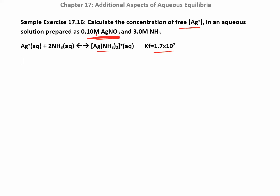Calculate the concentration of free silver ions. We prepared the solution with 0.1 molar silver nitrate — that's our source of silver ions. The nitrate is a strong electrolyte that dissociates, so we have 0.1 molar silver ions, 3.0 molar ammonia, and none of the complex ion.